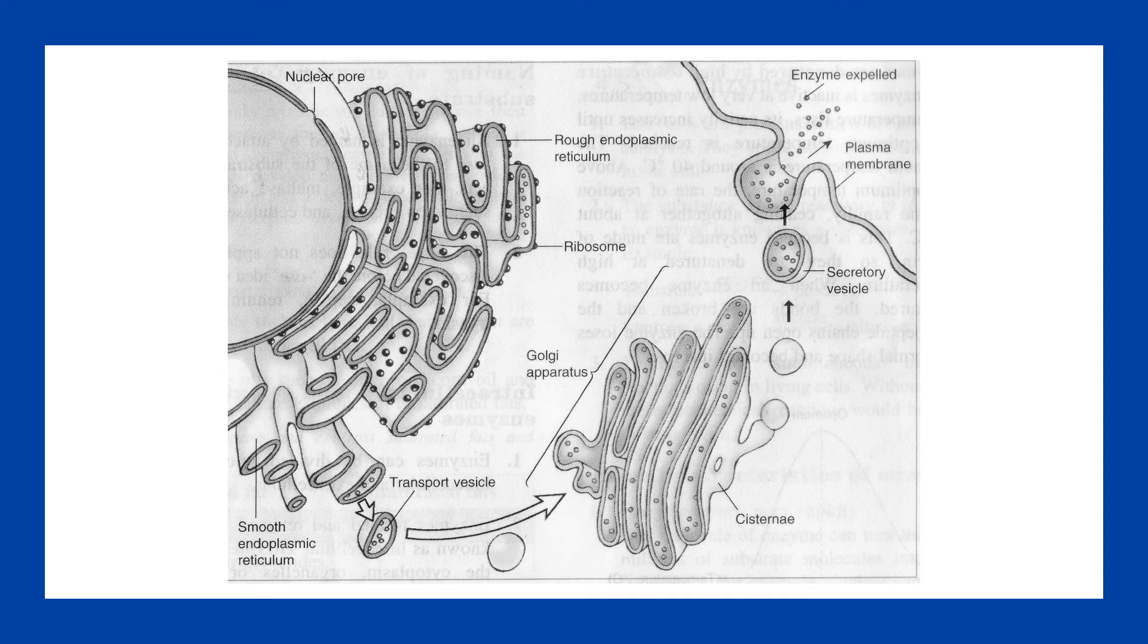So, these nucleotides will line up and will form hydrogen bonds with the template strand, which is the DNA. And then, there is an enzyme called RNA polymerase. So, as the name suggests, this enzyme basically binds the different RNA nucleotides together by forming phosphodiester bonds between them. And that creates a strand of what's called mRNA, messenger RNA.